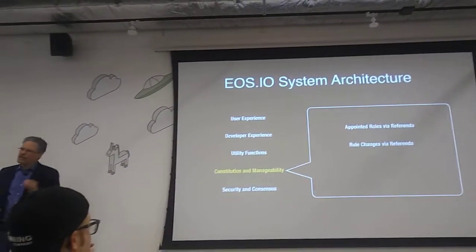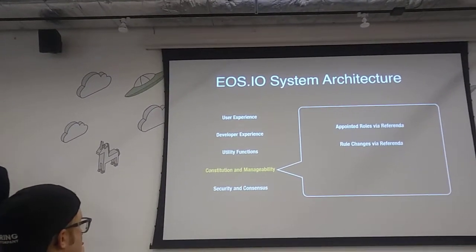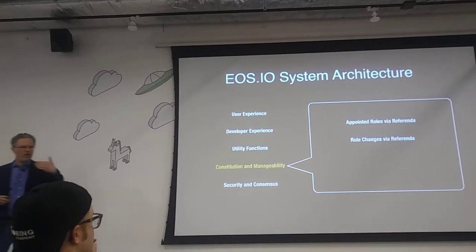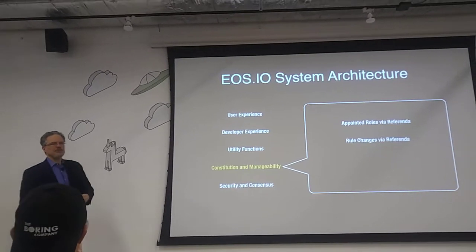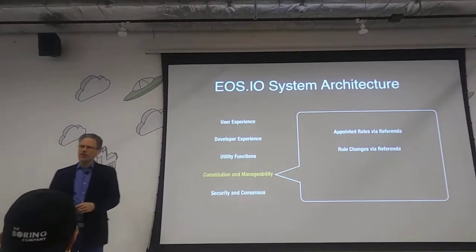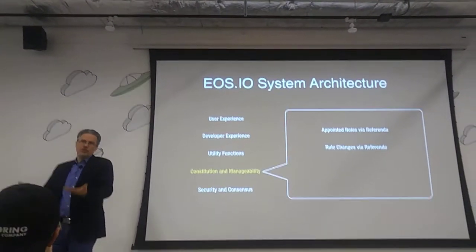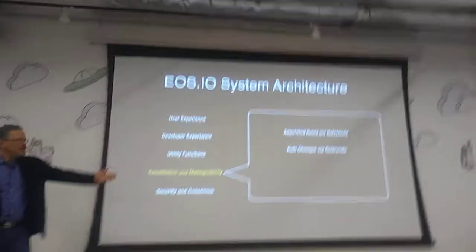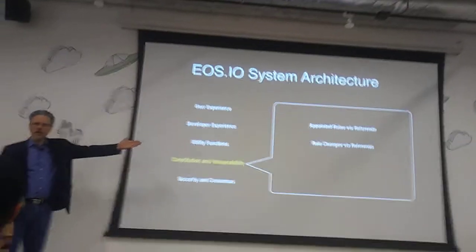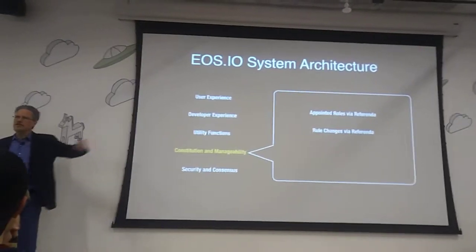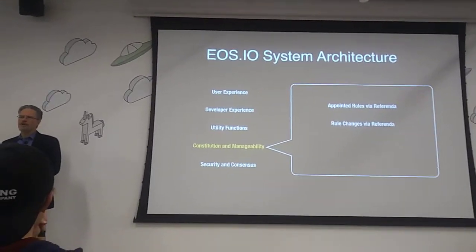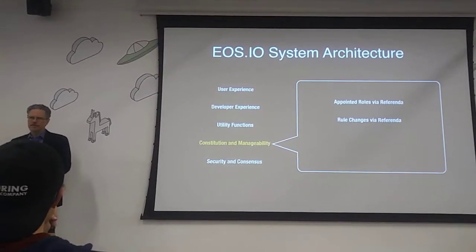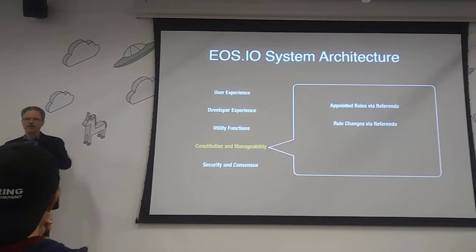If we want to change the rules — if we decide that 21 block producers is not the right number and we want to go to 22 or 30 or 15, whatever — we change the rules with a vote, not a hard fork.